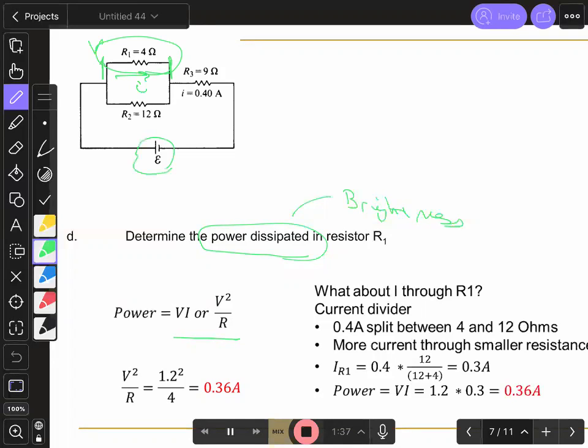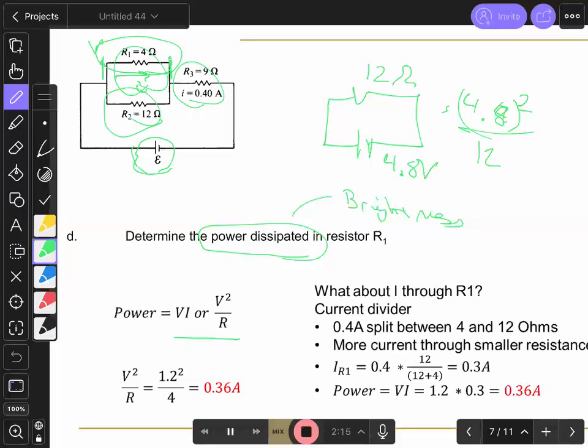If you do V squared over R, right, we said the equivalent circuit was, do you guys remember, we decided it was 4.8 volts. Yeah. And this was 12 ohms equivalent. So this is the power delivered by the battery, is 4.8 squared, V squared over 12. And if you add up the power of all three of the going to all three of the resistors separately, you'd get the same as this value here. So we'll start with V squared over R because we don't know what the current is, right, in R1. We know V squared was 1.2 squared divided by 4 ohms. It gives us 0.36 amps. What's wrong with that guys?